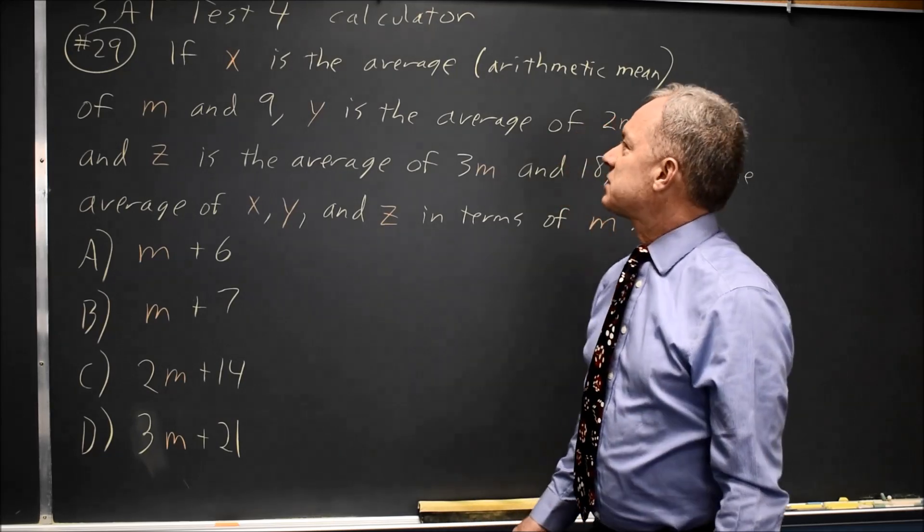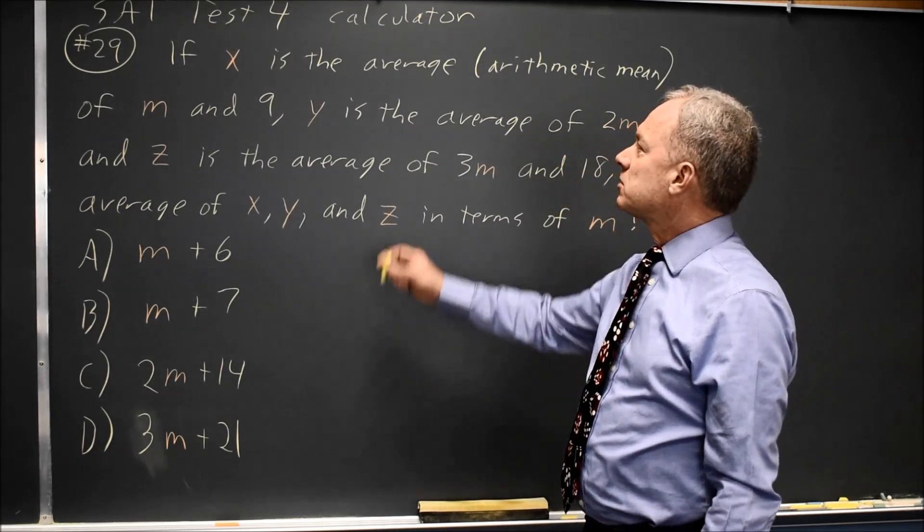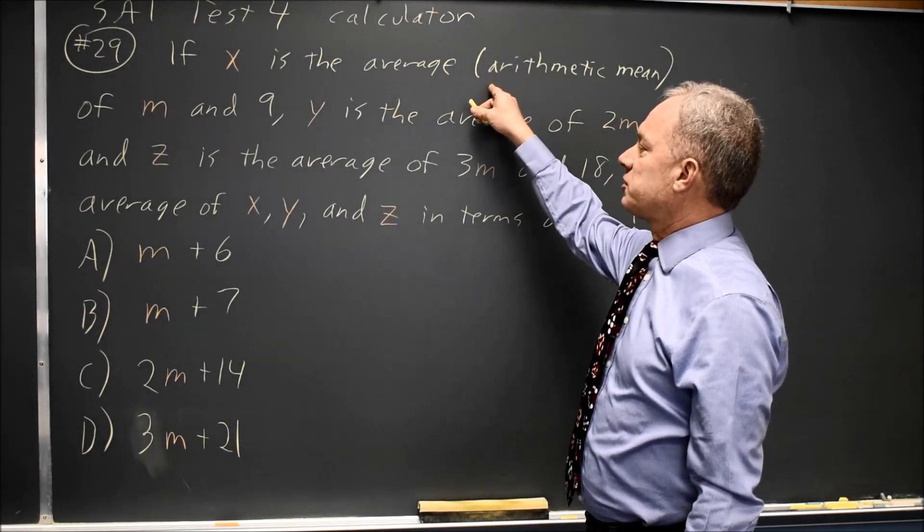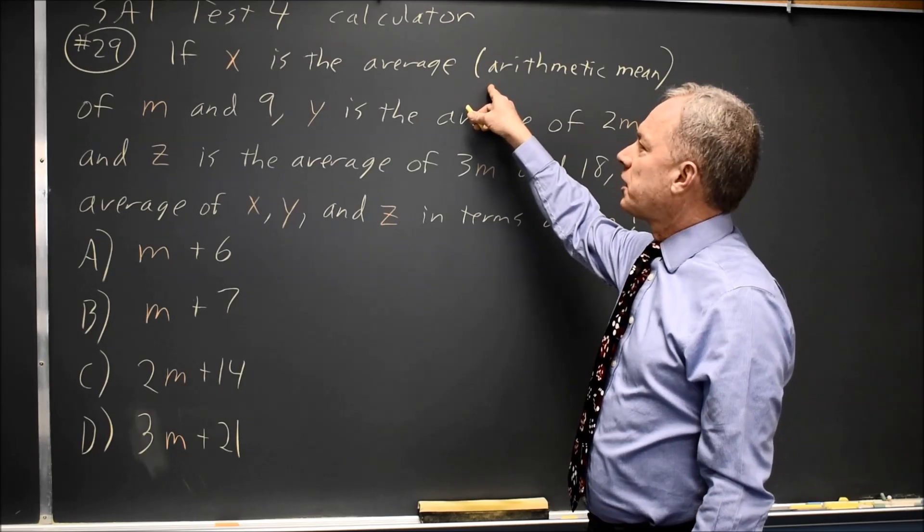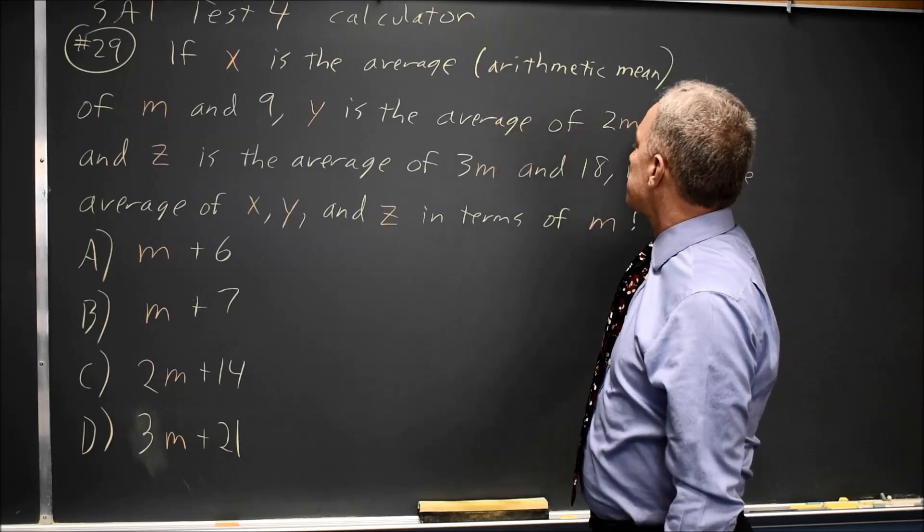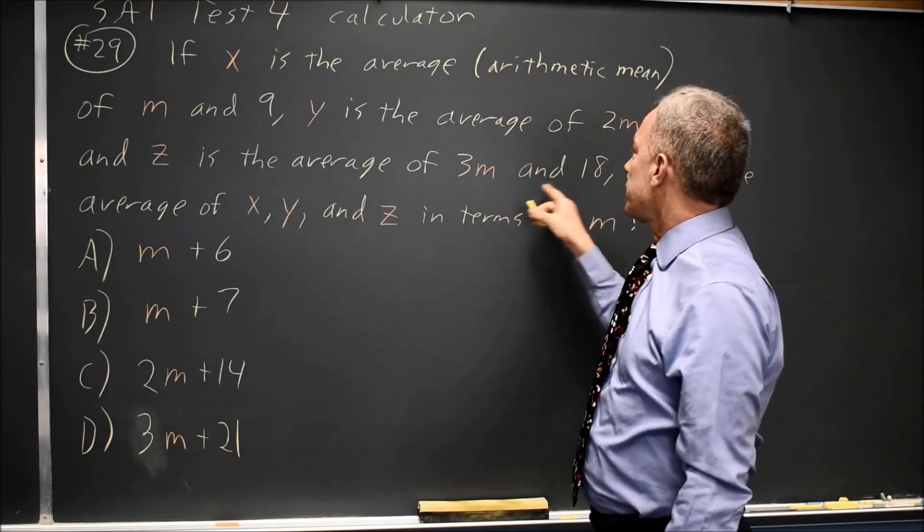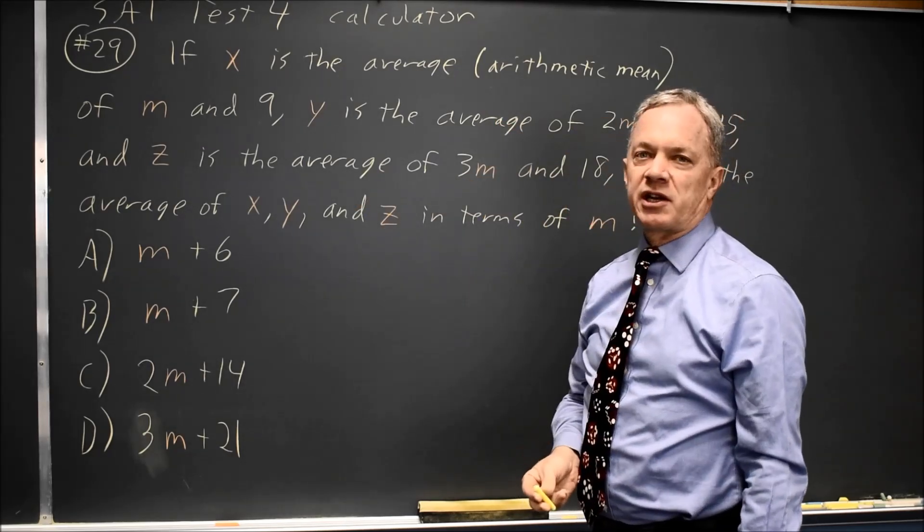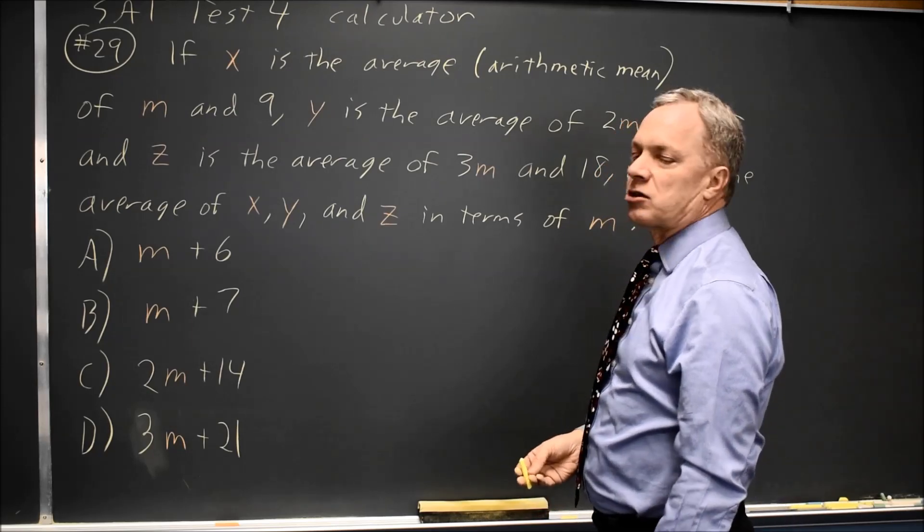College Board is asking a complicated question. If X is the average (arithmetic mean—add them up and divide by how many there are) of M and 9, Y is the average of 2M and 15, and Z is the average of 3M and 18, what is the average of X, Y, and Z in terms of M?